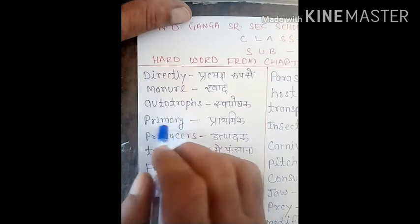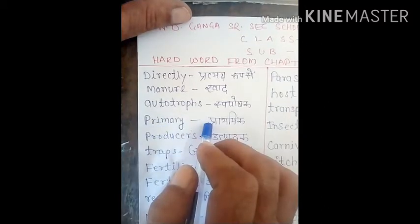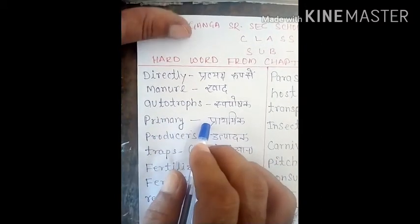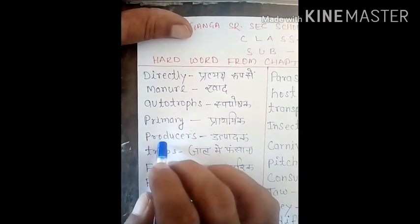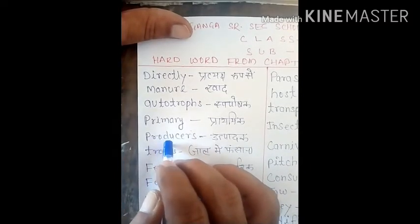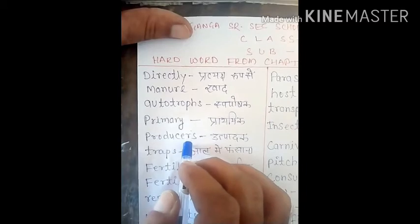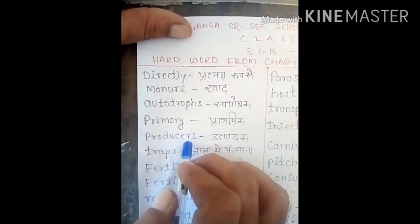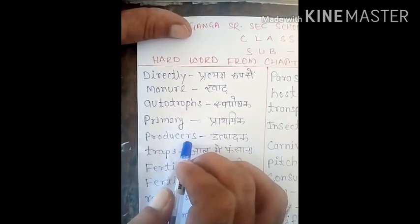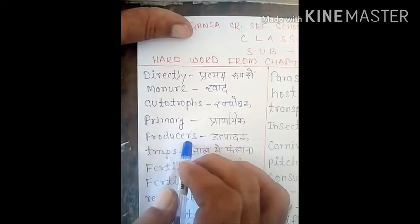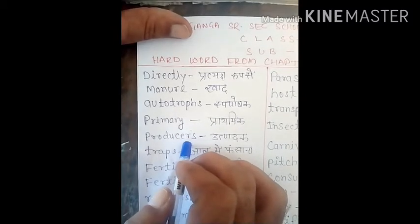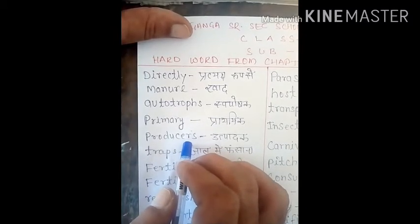Next word is 'primary', P-R-I-M-A-R-Y, meaning 'prathamik'. Next word is 'producers', P-R-O-D-U-C-E-R-S. Producers means 'utpadak'. In ko, plants ko hum kehte hain primary producers — prathamik utpadak. Jo food chain hai, us mein ye primary producers hain.